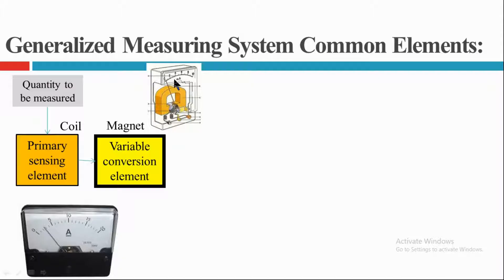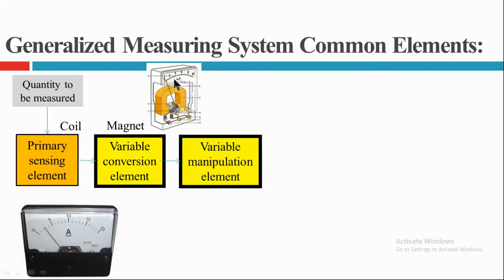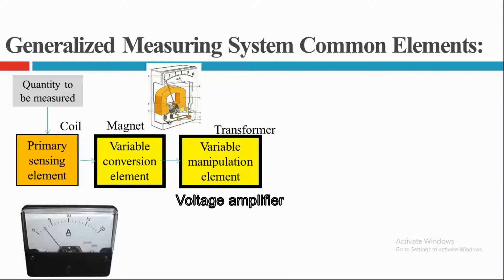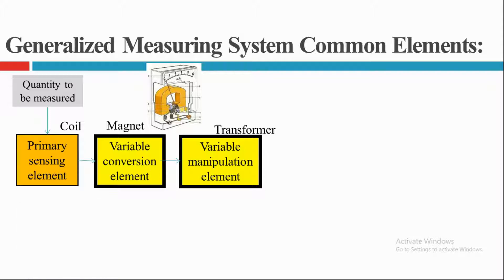Further, it is connected to a variable manipulation element. We add this to boost a lower level signal into a very high level signal. In an ammeter, a transformer acts as the variable manipulating system. In some other instruments, voltage amplifiers and gear systems are also used. These two systems are combinedly known as data conditioning elements.